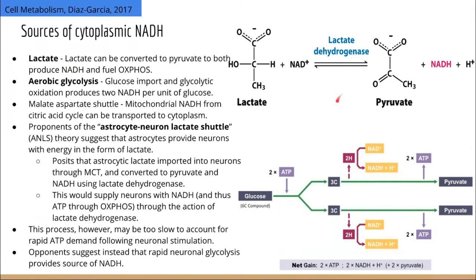Another more intuitive pathway is simply glycolysis: glucose can be imported into the neuron and shuttled through glycolysis to produce two NADH per unit of glucose. A third source of cytoplasmic NADH can come from the mitochondria themselves, but in the context of neuronal activation that doesn't make much sense, because NADH is needed in the mitochondria, so it wouldn't make sense for it to be transported into the cytoplasm.